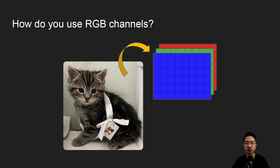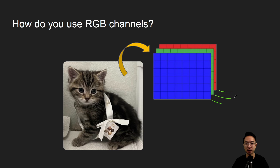How do you use RGB channels? When a picture is converted into three color channels, you get a matrix with a depth of three — each of the three layers is a 2D array. You can use those individual 2D arrays to do different things: convert to grayscale, or look at individual channels, maybe with a histogram plot to see each channel by itself.